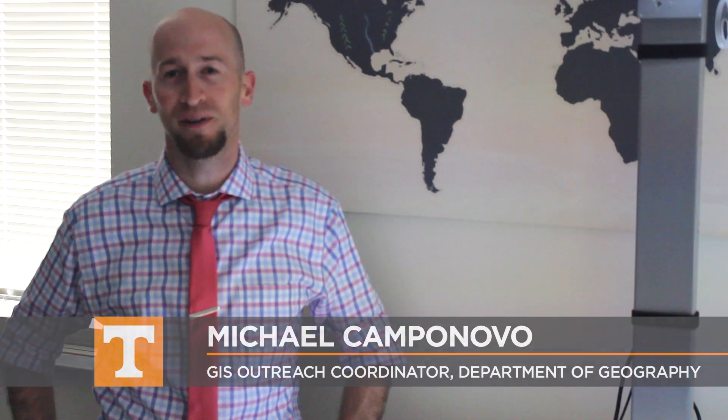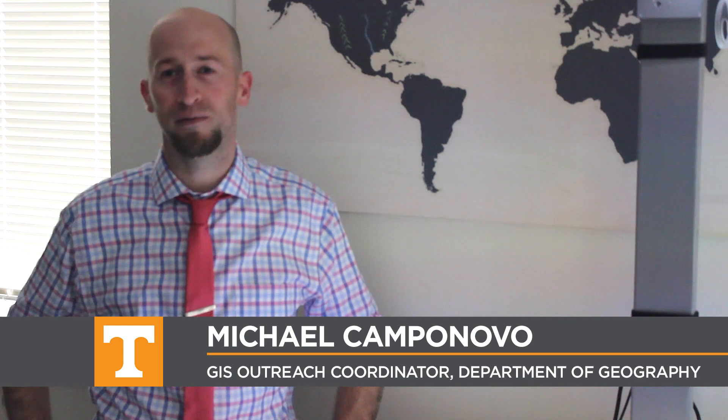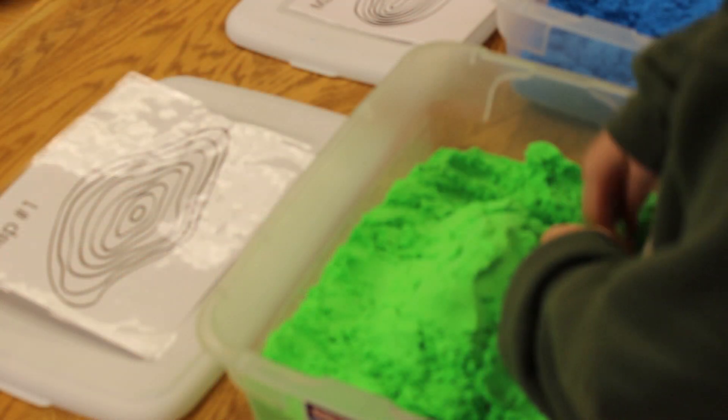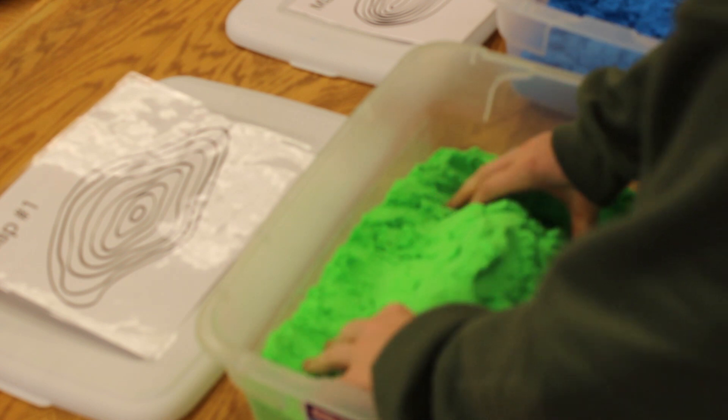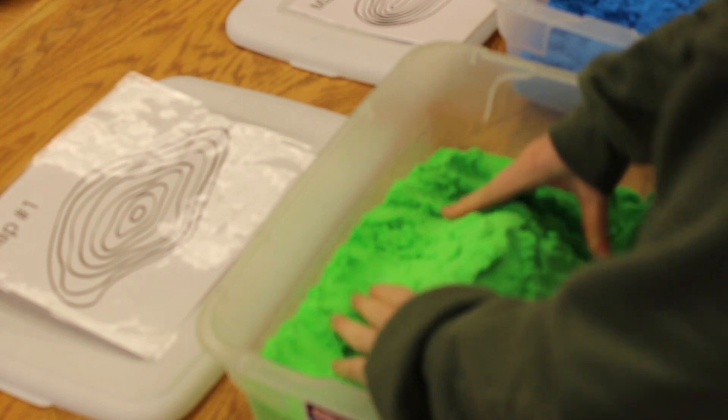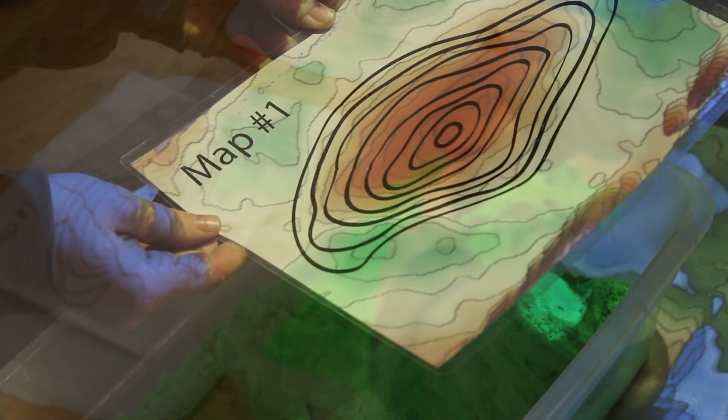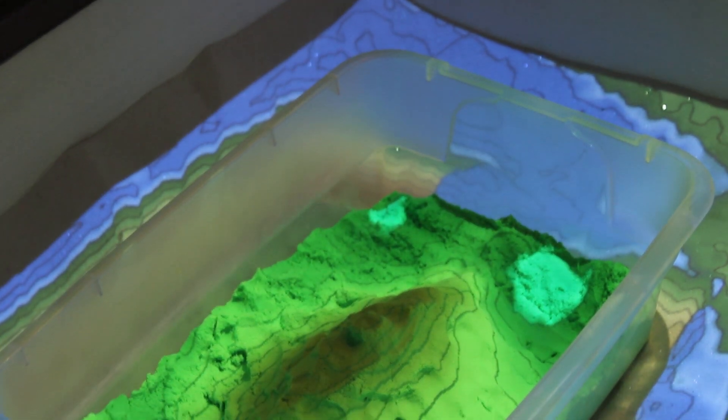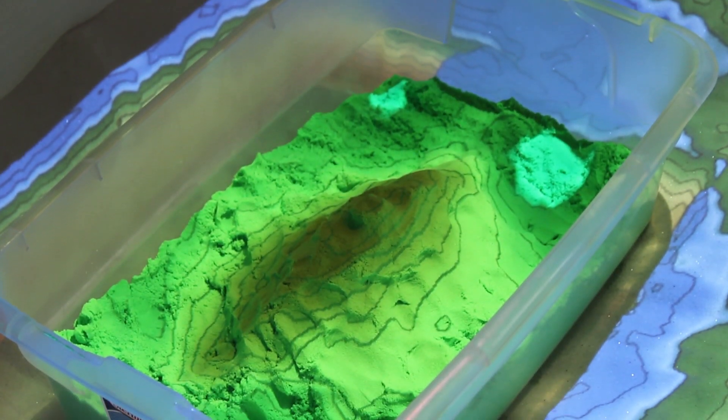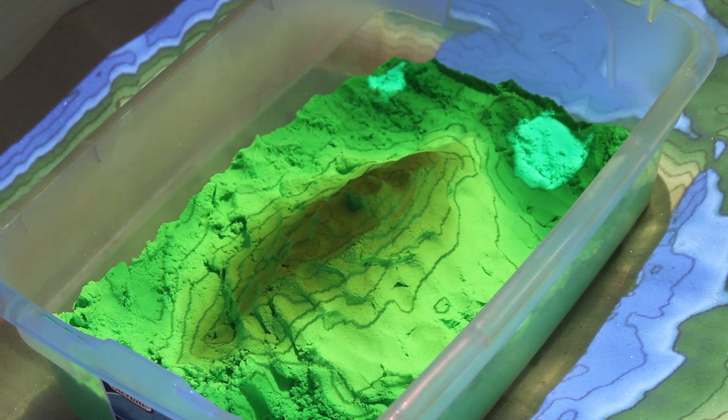Hello, my name is Michael Campanovo and I'm the GIS Outreach Coordinator for the Geography Department at the University of Tennessee. One of our department's goals is to support K-12 teachers, especially when it comes to helping students learn how to create and read maps, and how that relates to the broader topics of human and physical geography, as well as geospatial technology.